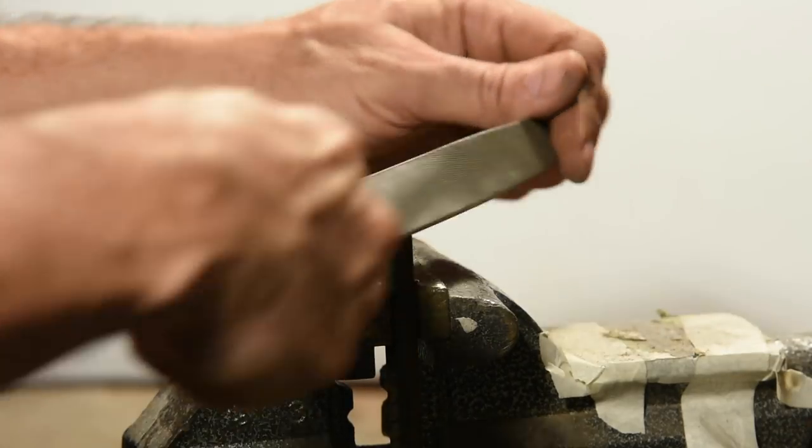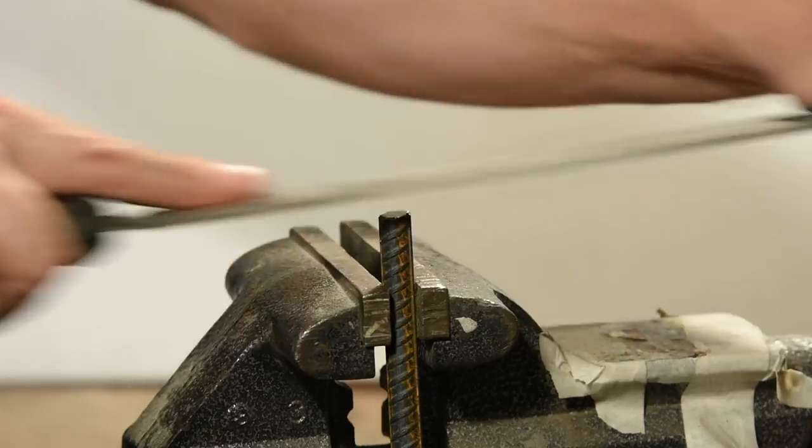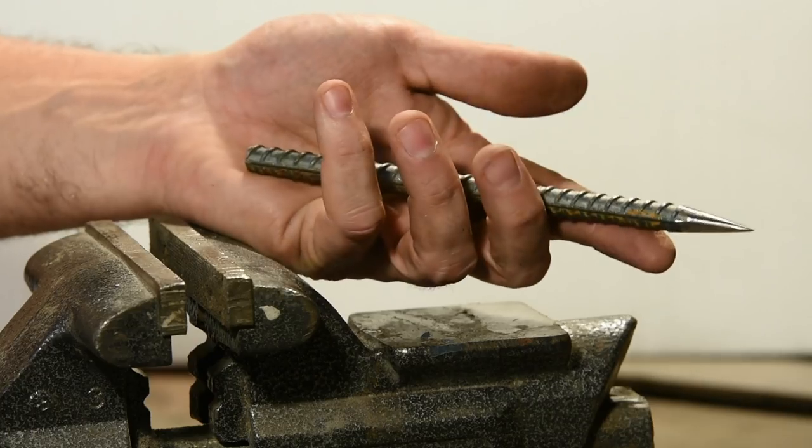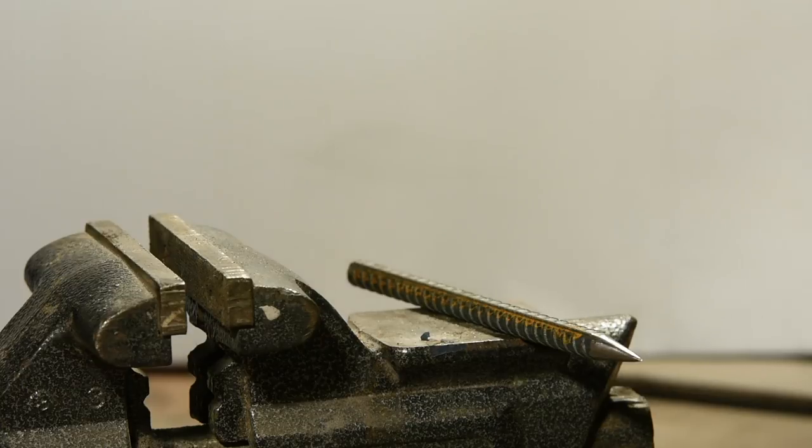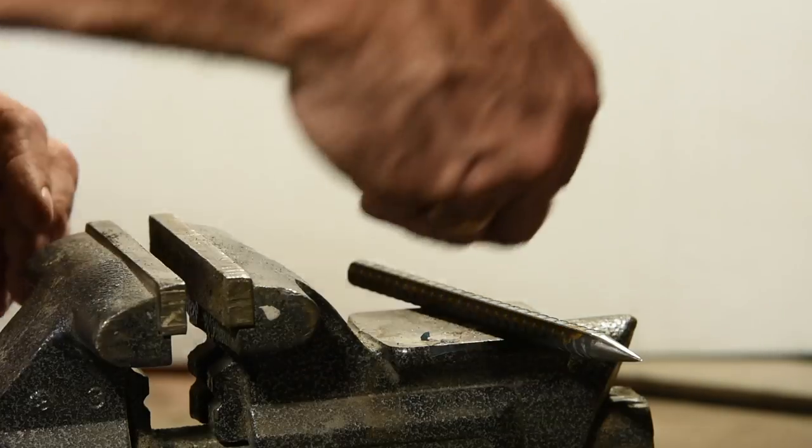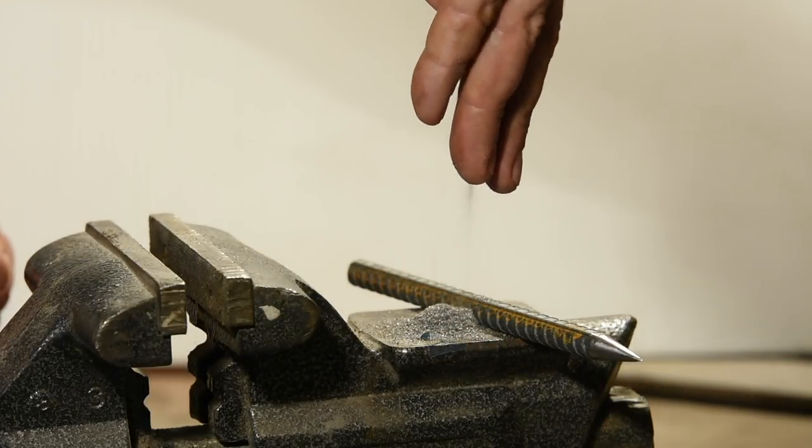Next, I'll clean up the back end of the shuriken so that it doesn't cut me. And that's it. Maybe 20 minutes of filing start to finish and you've turned rebar into this.